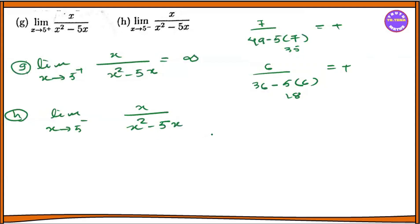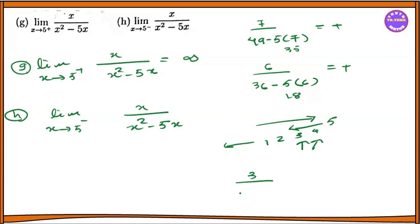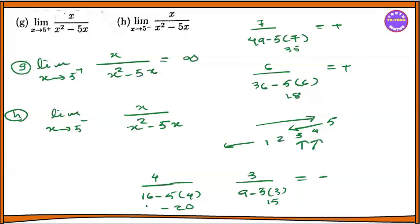For the left-hand approach, x tends to 5 minus of x by x squared minus 5x. Testing values 4, 3, 2, 1 — for example x equals 3: 3 squared minus 5 times 3 equals 9 minus 15 equals minus 6. Then x equals 4: 4 squared minus 5 times 4 equals 16 minus 20 equals minus 4. The result approaches minus infinity.